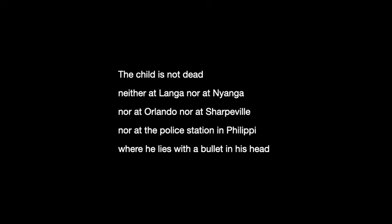'The child is not dead' — that first-line repetition once again for emphasis — brings up the idea of physical death versus spiritual persistence. The child is physically dead, reinforced by the last line: 'he lies with a bullet in his head.' This is a paradox because you've said the child is not dead, then he lies with a bullet in his head. But it emphasises that while the child is physically dead, his spirit will live on. The desire and spirit for freedom cannot be killed by bullets — it will never actually die until freedom is realised.